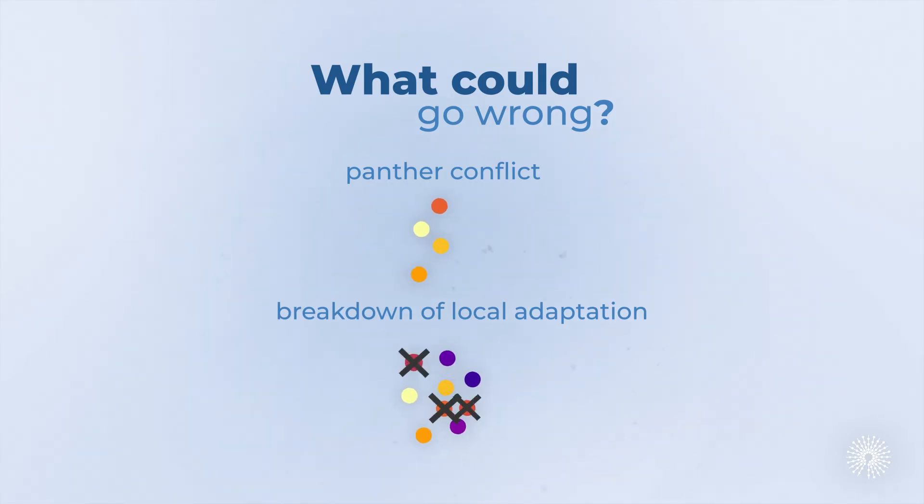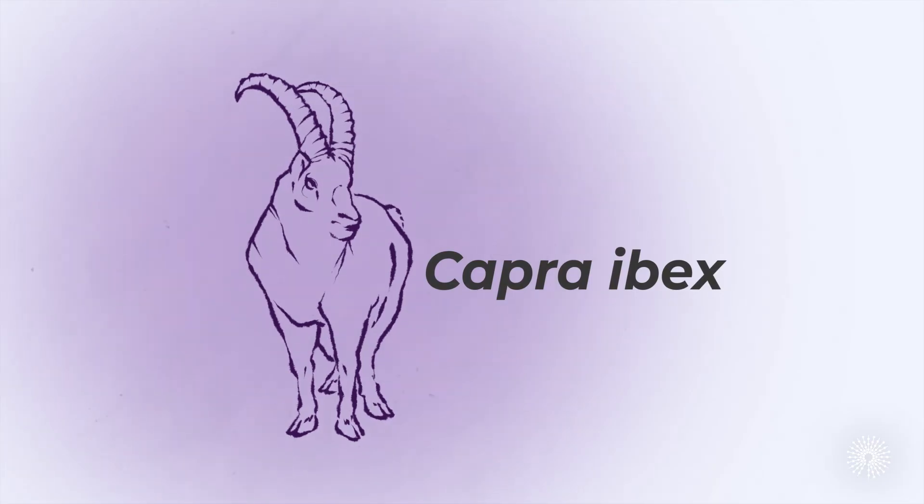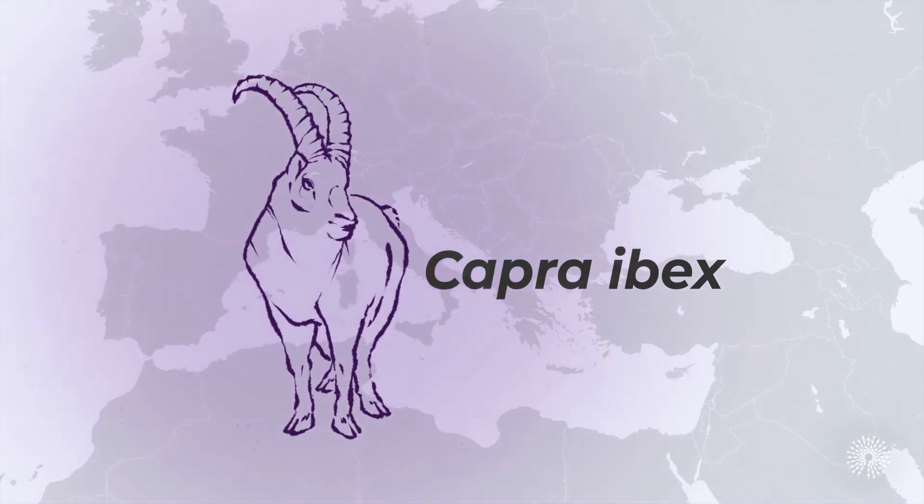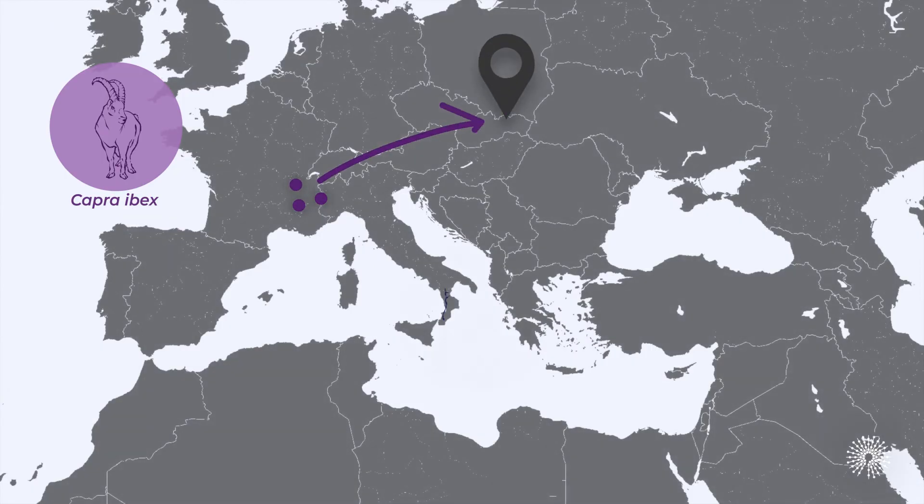This worst-case scenario has happened. The alpine ibex that used to roam all over Europe was hunted down to the last 100 or so individuals by the early 1800s. To try to bring them back using genetic rescue, a few surviving alpine ibex were introduced to some mountains in Slovakia.